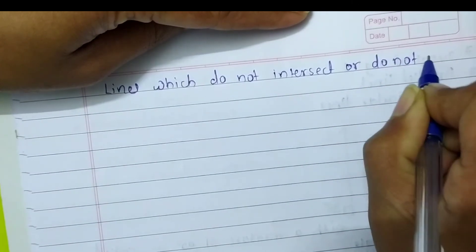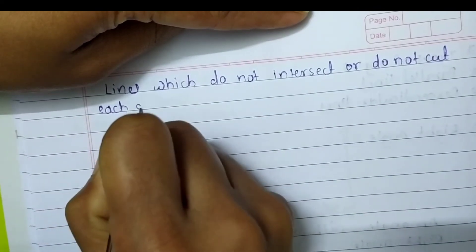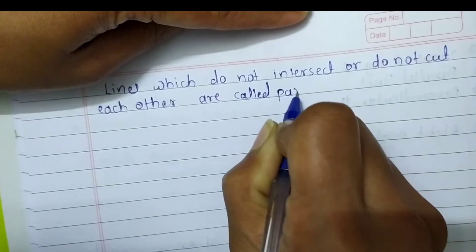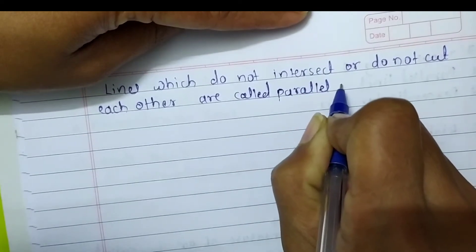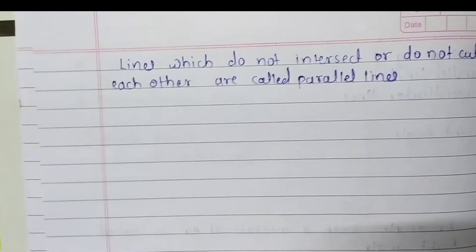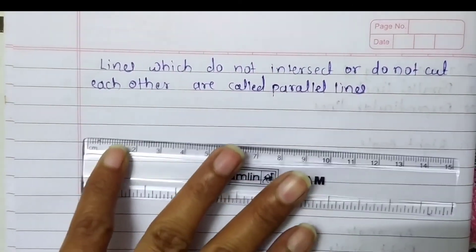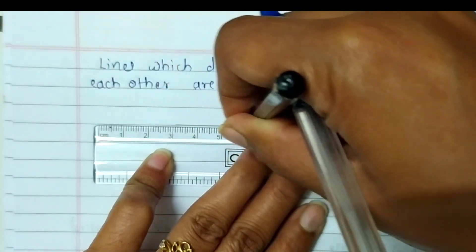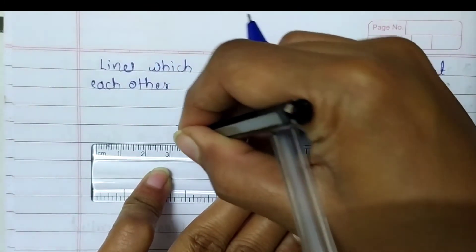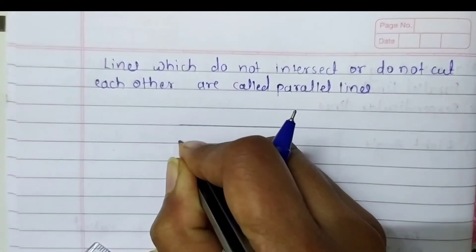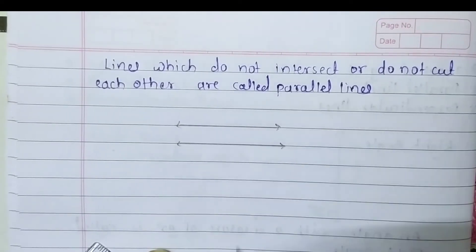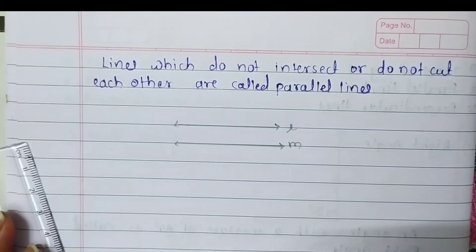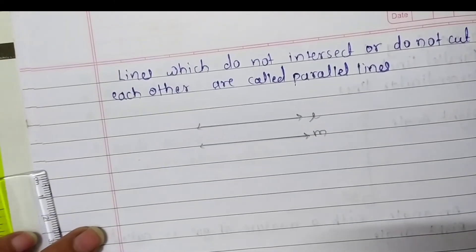Lines which do not cut each other are called parallel lines. Let's draw a figure of parallel lines. Our notebook's lines always show parallel lines — they are examples of parallel lines. Now we are going to learn about perpendicular lines.